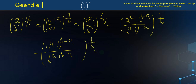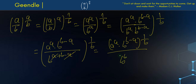We can simplify this: we're going to have b to the b here, and here we're going to have a to the a times b to the b minus a, to the power of 1 over b. Then we're going to have b to the b, to the power of 1 over b. We can simplify this because it will be b over b.